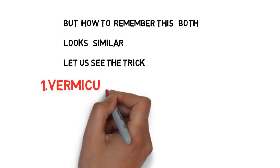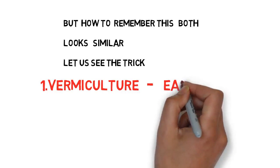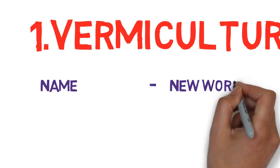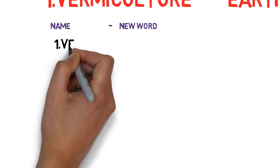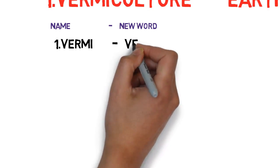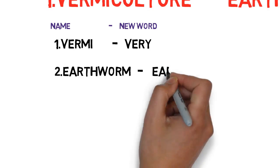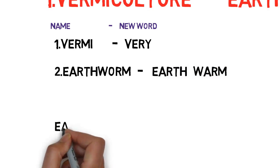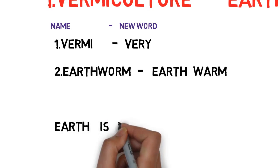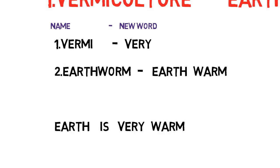Vermiculture is related to earthworm. Look at the word: V-E-R-M-I — vermi. I replaced it with 'very.' Vermi sounds like 'very.' Both start with V-E, so if you remember 'very' you can easily remember 'vermi.' Try to repeat this word two or three times so that you can remember it easily.